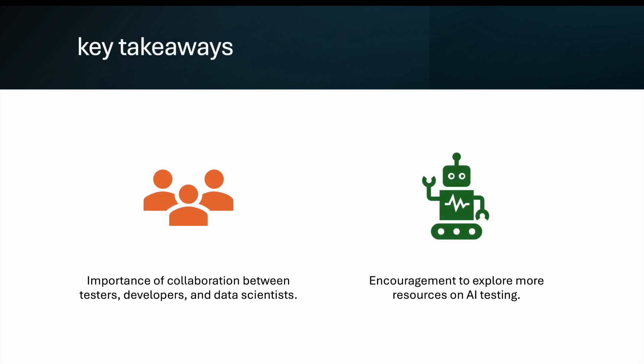For takeaways: the team is very important for AI testing, because nobody has proven experience yet in what we are testing in 2025. Collaboration between testers, developers, and data scientists is important. Data scientists know what algorithm is being used and what data models are trained on, so while preparing data or test cases, you can ask them — they give insights and you get more ideas.